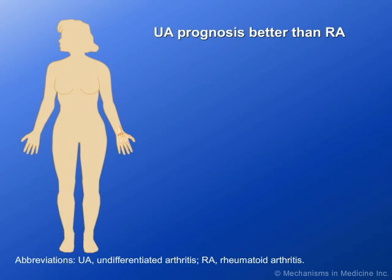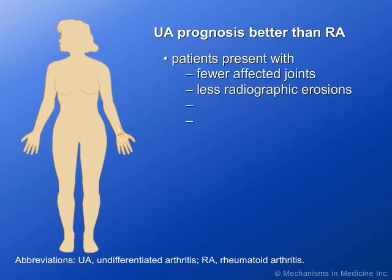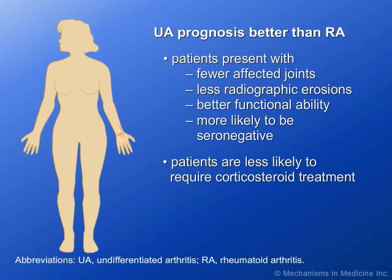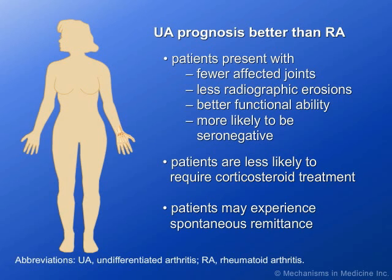Overall, UA has a better prognosis than rheumatoid arthritis, or RA. As compared to RA, patients with UA generally present with fewer affected joints, less radiographic erosions, better functional ability, and a greater likelihood of being seronegative. Patients with UA are also less likely than those with RA to require treatment involving the use of corticosteroids, such as prednisone, or disease-modifying anti-rheumatic drugs, DMARDs. As well, a substantial portion of patients with UA experience spontaneous remittance.